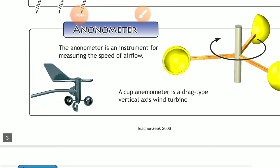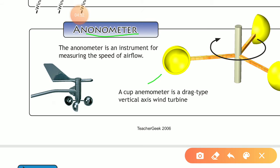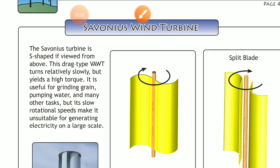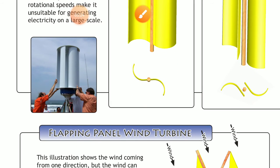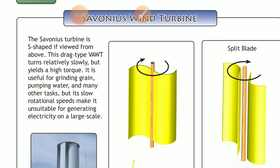An anemometer is used to measure the speed of wind, which we have already studied in our last topic. Next, we look at vertical axis type turbines. The first is the Savonius wind turbine, shown here in an S-shape. This is a vertical axis turbine; it yields high torque and is useful for grinding grain, pumping water, and many other tasks, but its slow rotational speed makes it unsuitable for generating electricity at large scale.